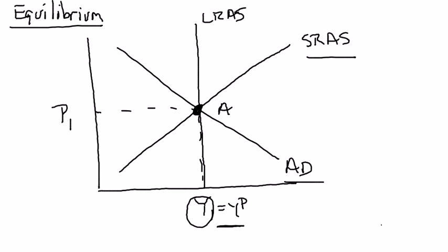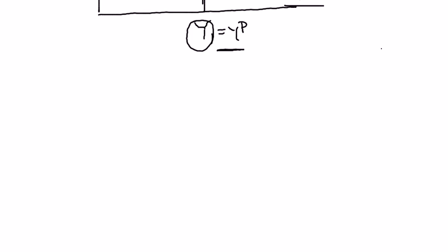So why is this equilibrium stable? We think it's stable because the labor market is going to adjust to ensure real GDP gets driven to potential in the long run.